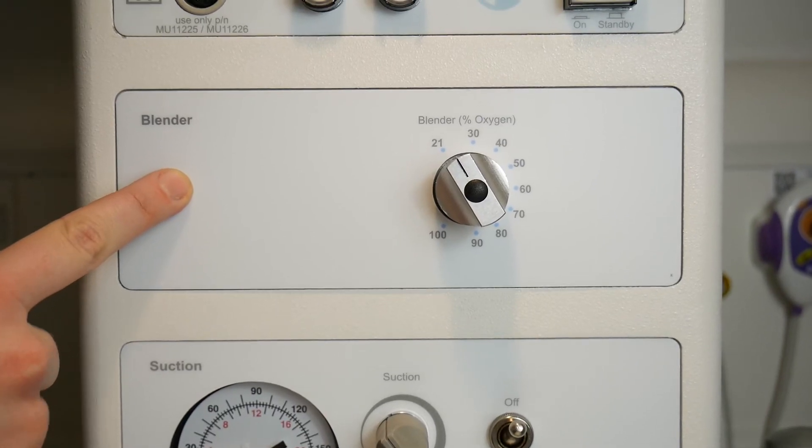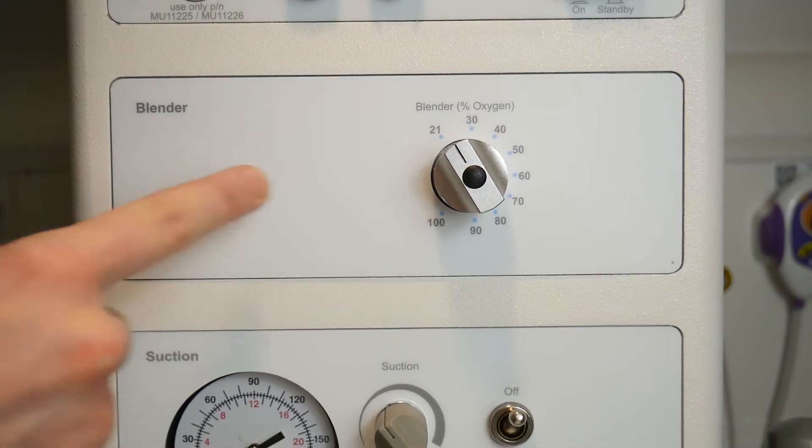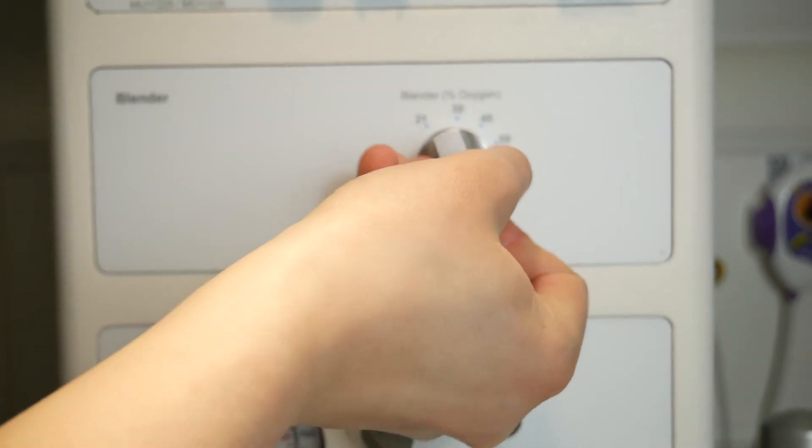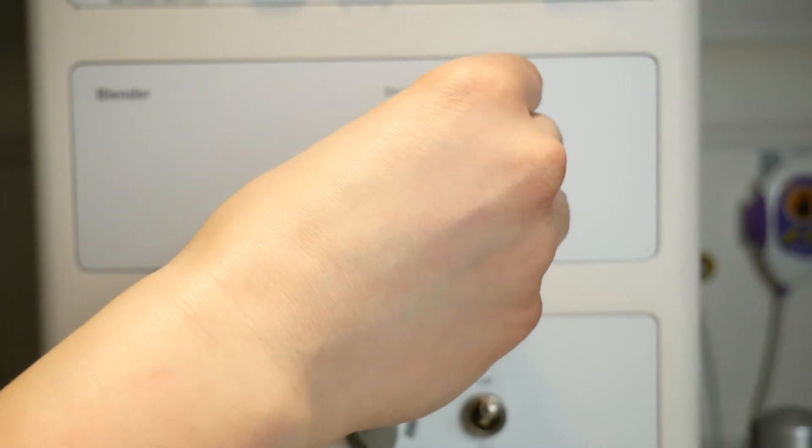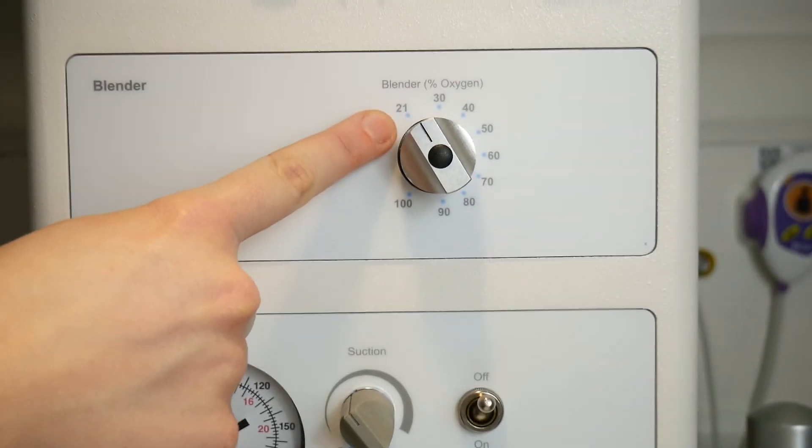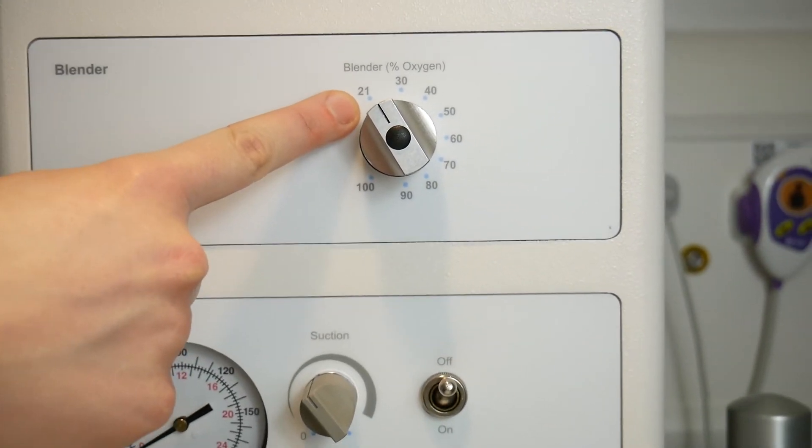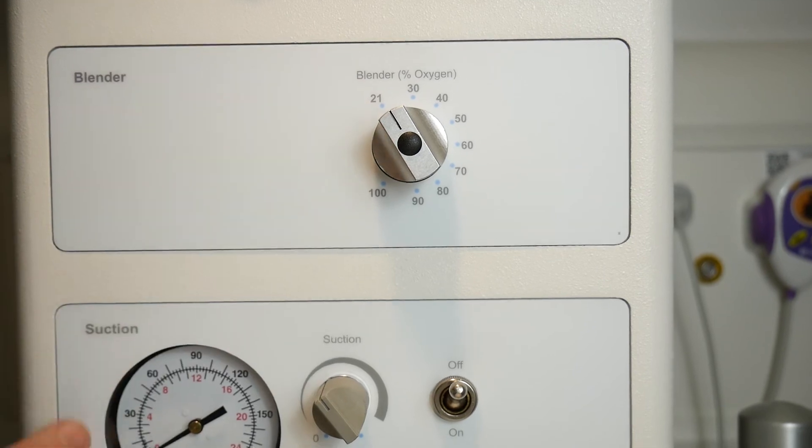This blender corresponds to the FiO2 of the gas coming out of the auxiliary gas port that you'll see in a moment. You can dial it up or down. Most people set the initial FiO2 as 21% so that you're resuscitating on air.